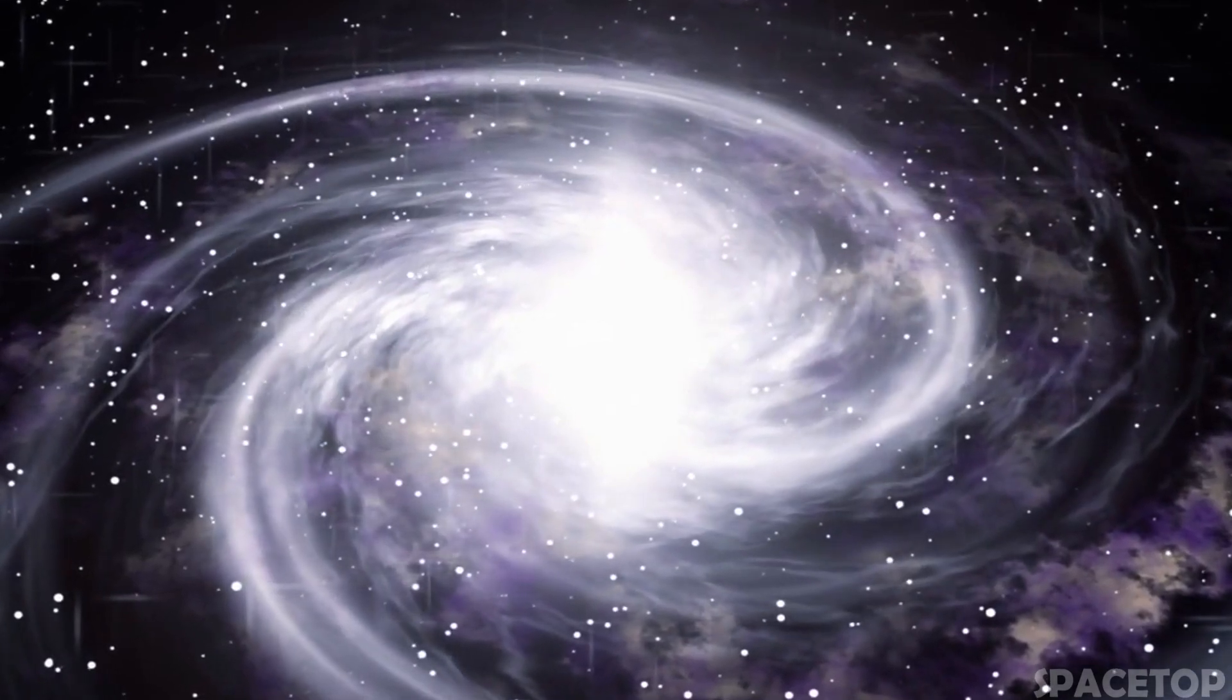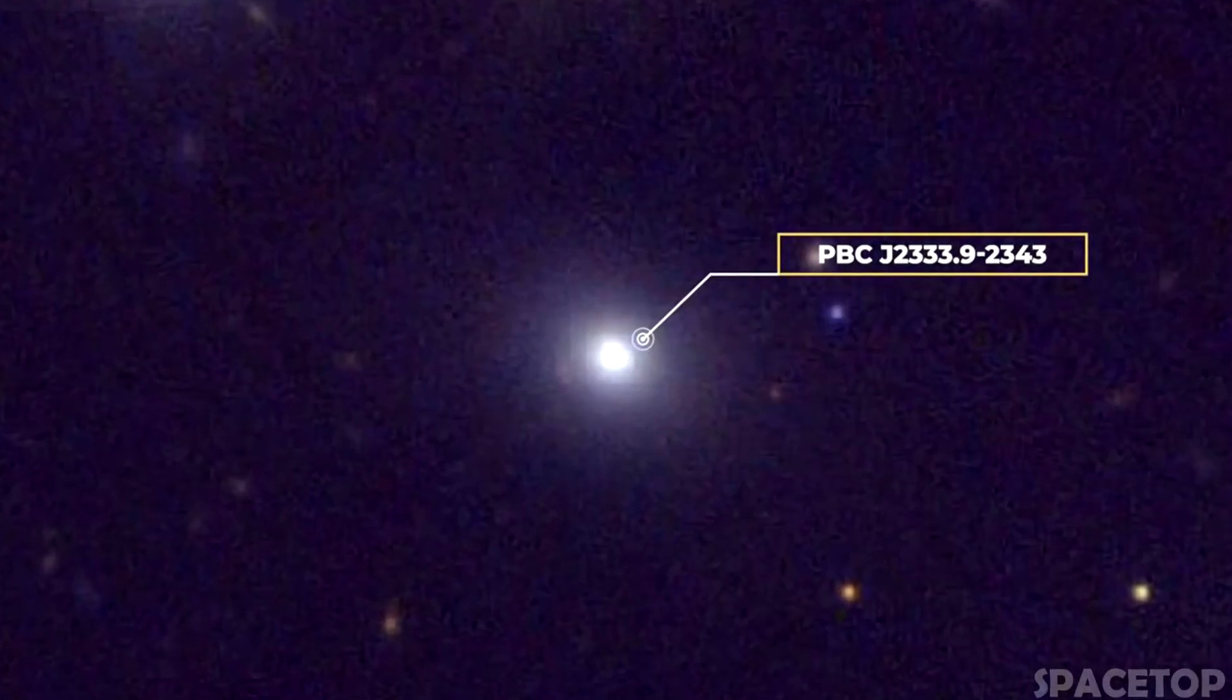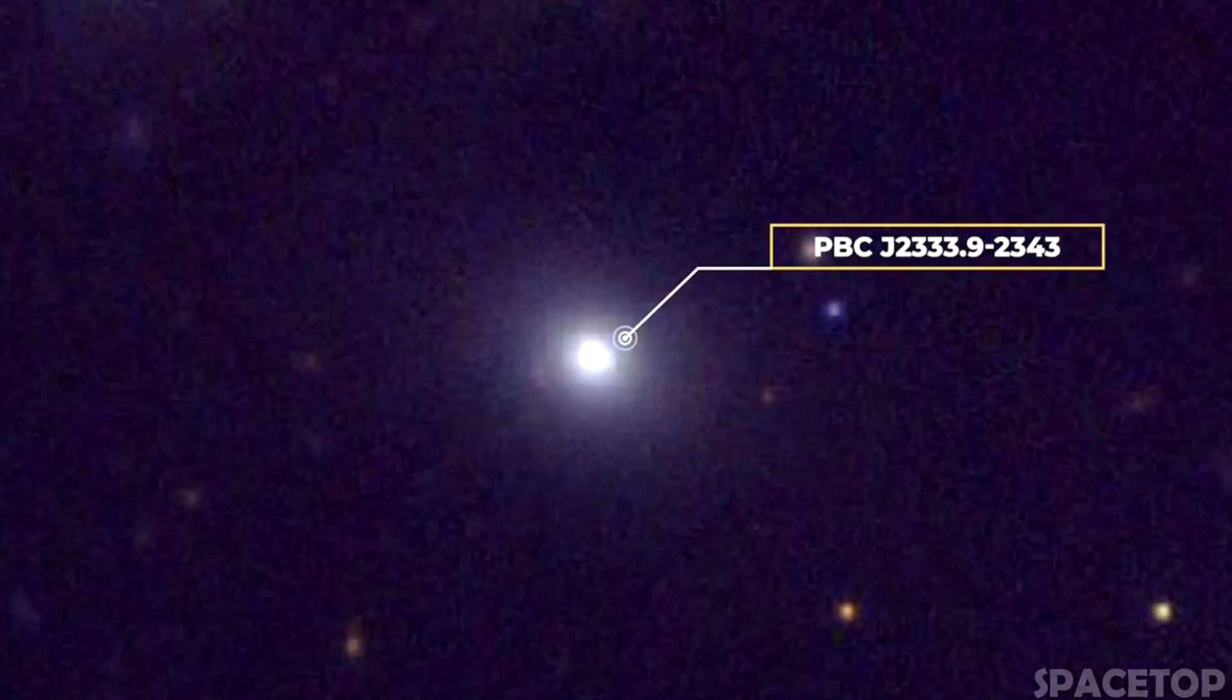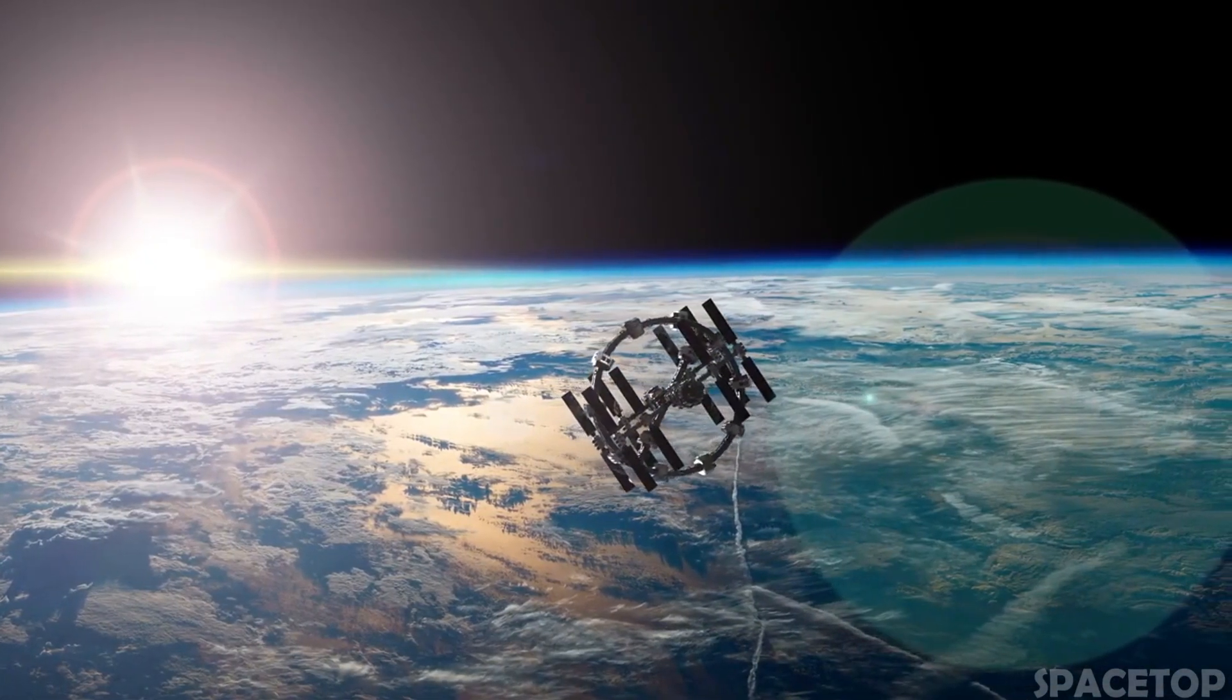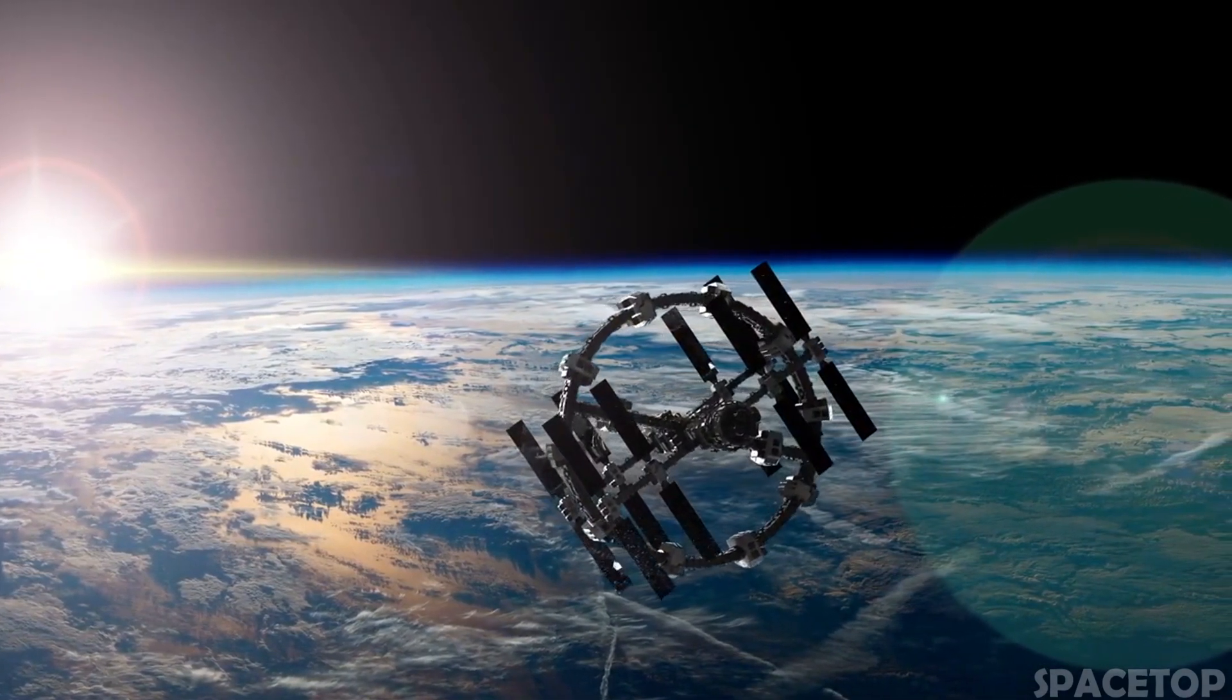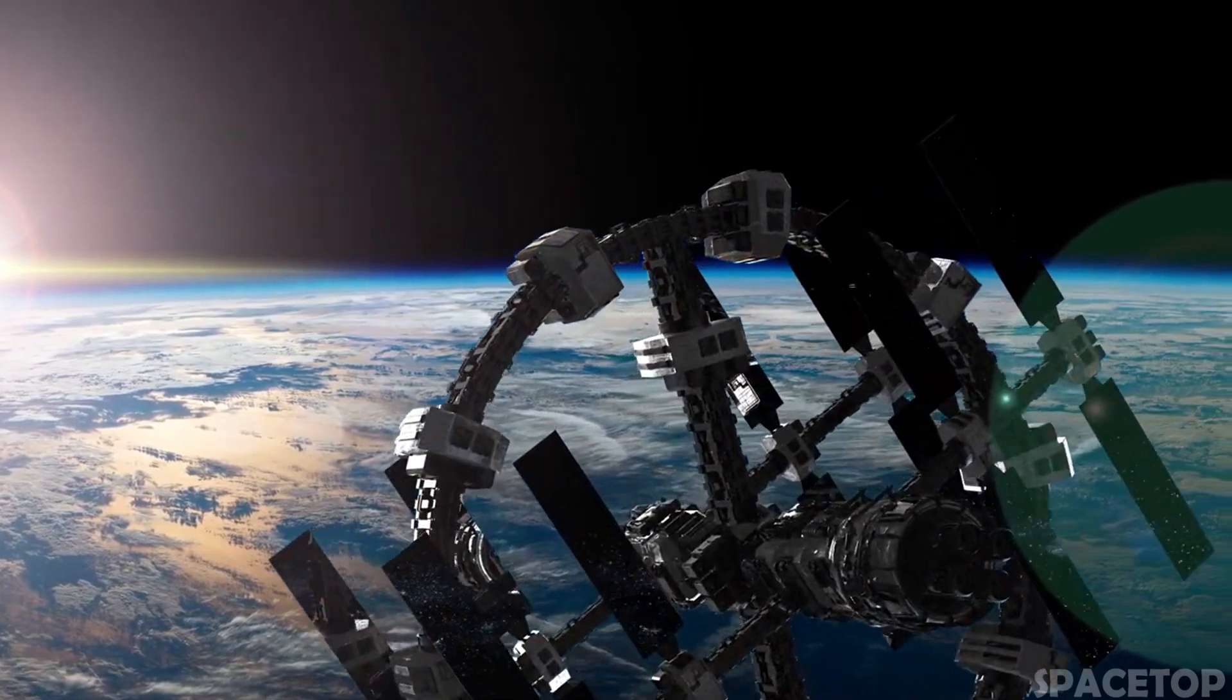An international team of astronomers has discovered a galaxy with a jet that has changed direction. The galaxy is located at a distance of 657 million light-years from us, with a redshift. For simplicity in the video, let's call it PBC. The radio map obtained using the Very Large Array Telescope shows that the galaxy and its jets extend for about 1.2 megaparsecs, or about four million light-years, classifying it as a giant radio galaxy.